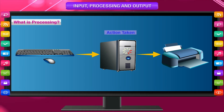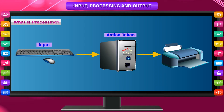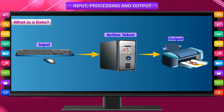What is processing? The action taken by a machine to work on input and change it into output is called processing. What is data? The inputs given to the computer are known as data.